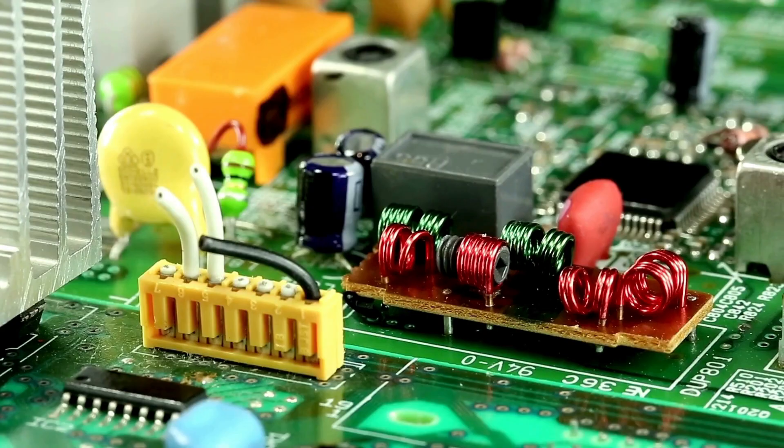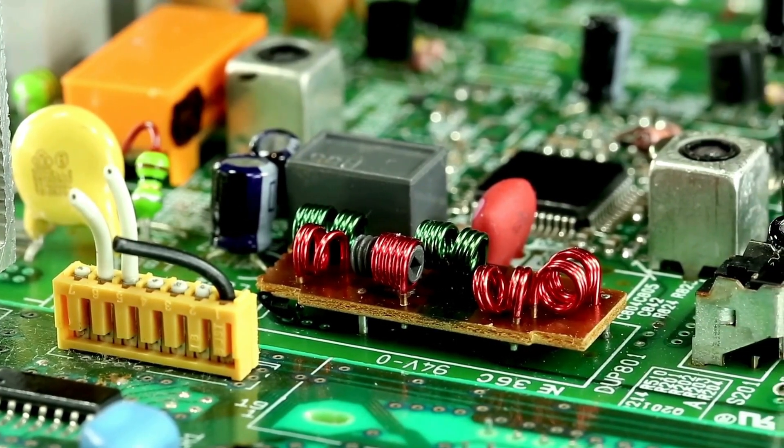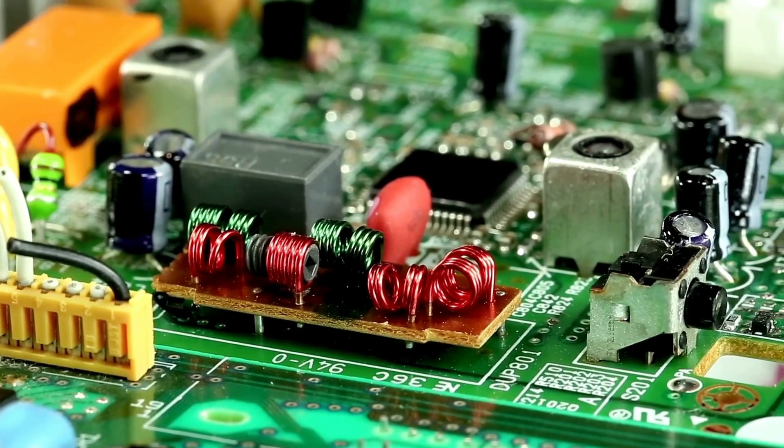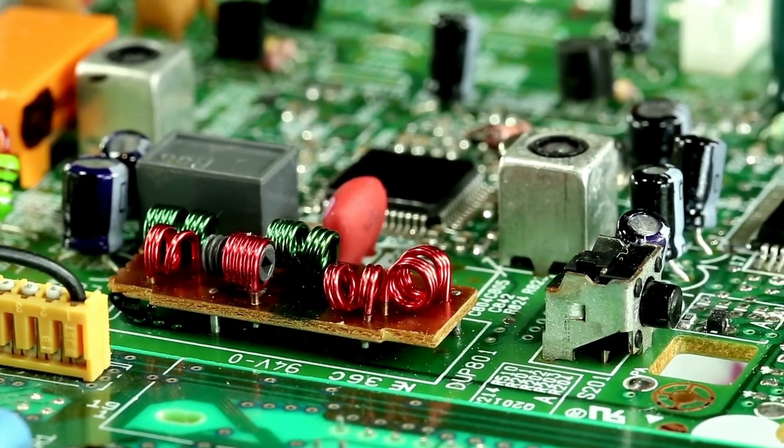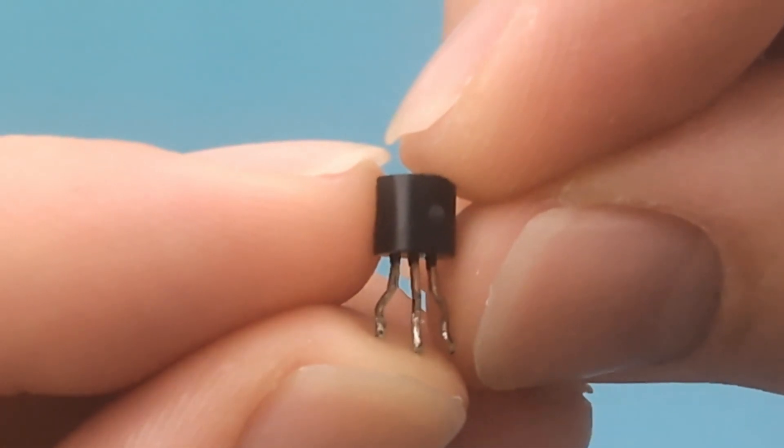Transistors are semiconductor devices used to amplify or switch electronic signals and electrical power. They are fundamental components in modern electronic devices, found in everything from simple switches to complex computer processors. Transistors come in various types, but the most common ones are Bipolar Junction Transistors or BJT.